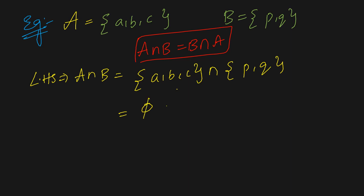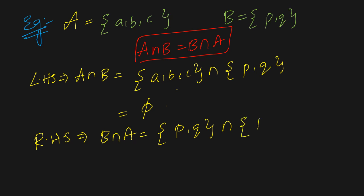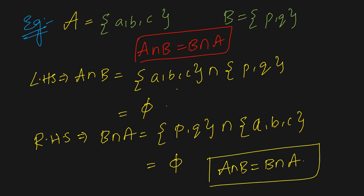The left-hand side is A intersection B: {a, b, c} intersection {p, q}. We need to find the common elements — there are no common elements, so we get the empty set phi. The right-hand side is B intersection A: {p, q} intersection {a, b, c} — there are also no common elements, so this is also phi. Therefore A intersection B equals B intersection A.